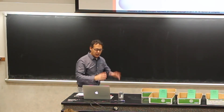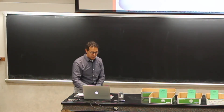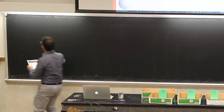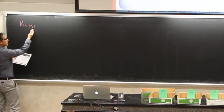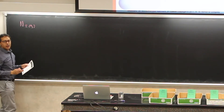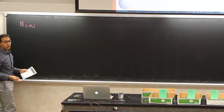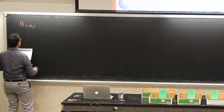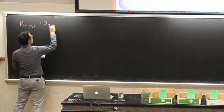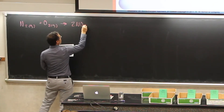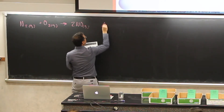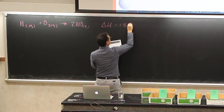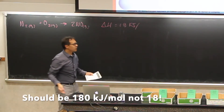If we take a reaction and reverse it, we need to change the sign. For example, here N2 — and it's important to put in the states of matter, because sometimes you could have more than one state, like water (H2O) could be a liquid, a solid, or a gas, so it's a good idea to keep the states in there. Nitrogen plus oxygen gives us two nitrogen monoxides, and this involves 180 kilojoules per mole.